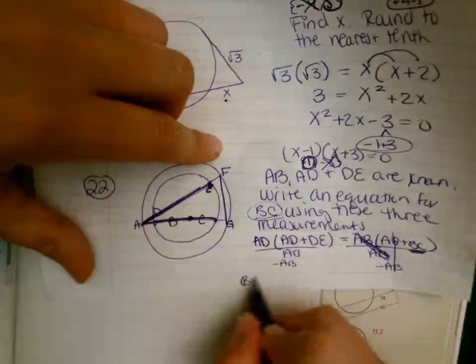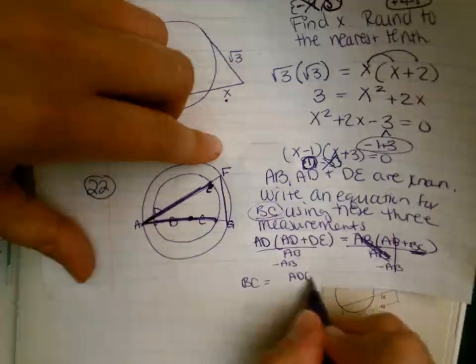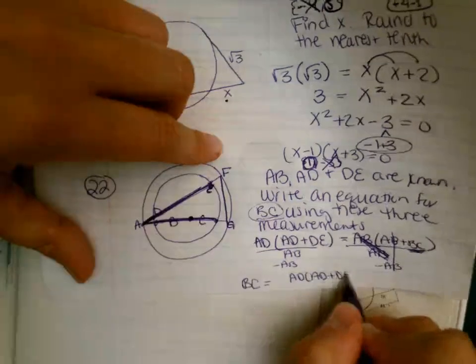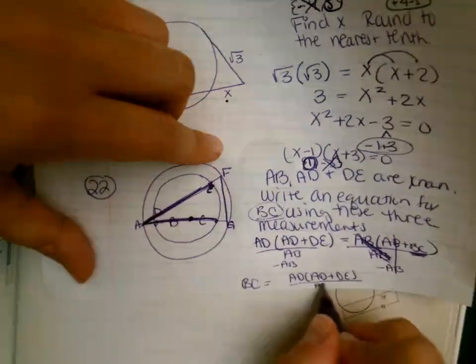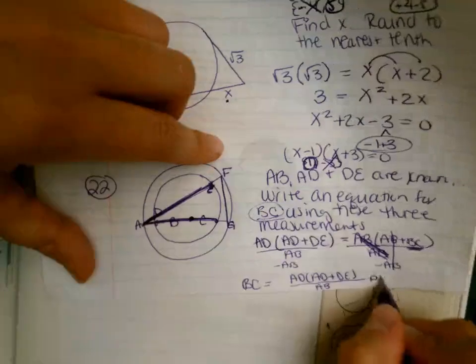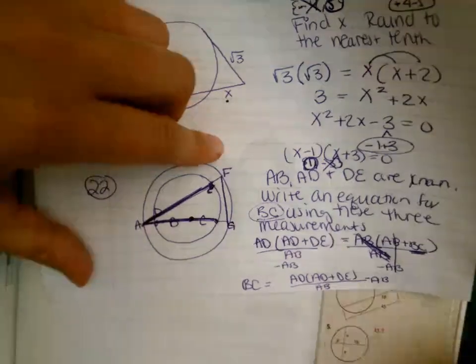And when I do that, I get that BC equals AD times AD plus DE all over AB minus AB. And that is my final answer.